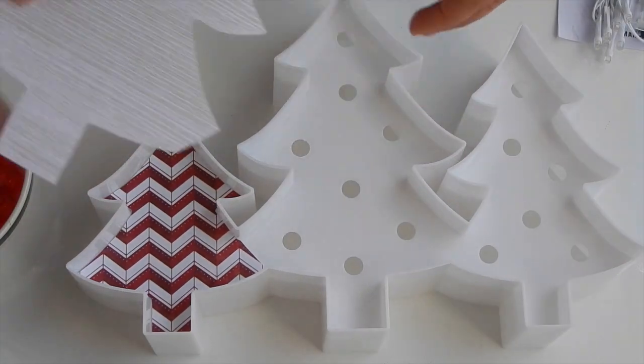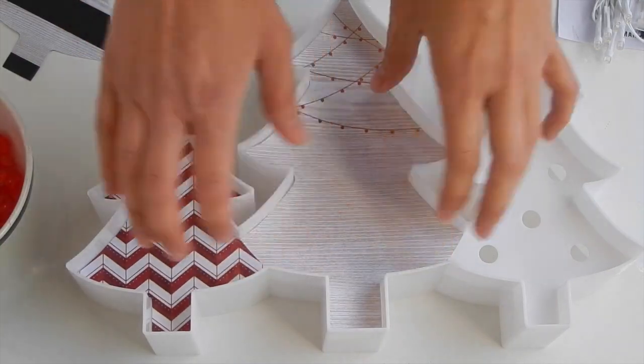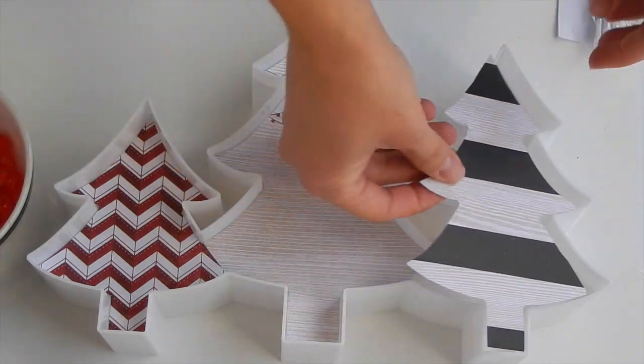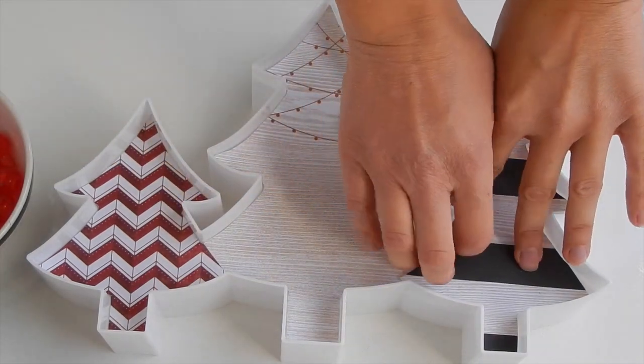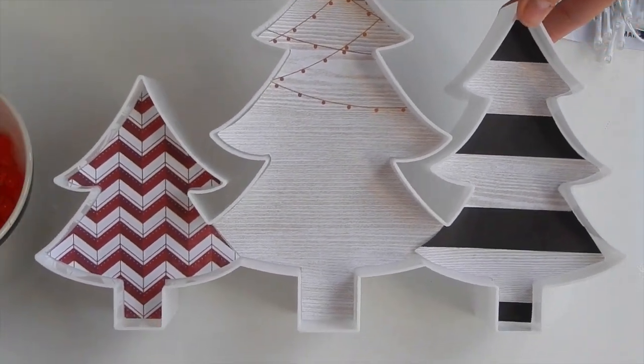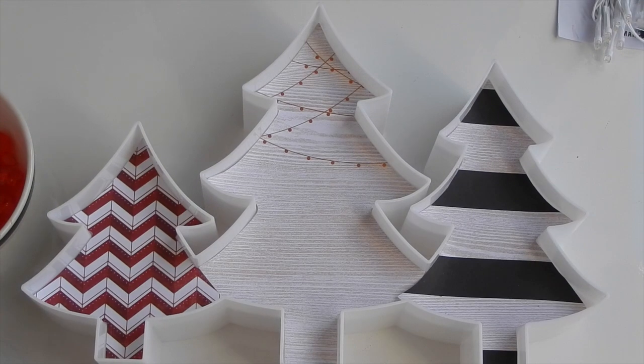Once they're trimmed out, you can just simply pop them right into the marquee love trees. Just like that, they slide in super easy. It's an awesome way to customize the inside of your tree and not have to have the same piece of patterned paper.